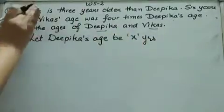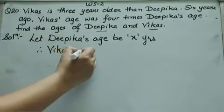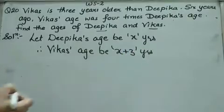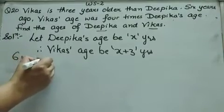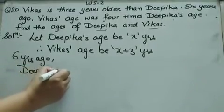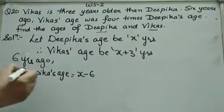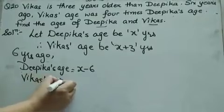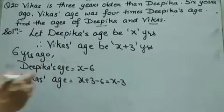If Deepika is X years old and Vikaas is 3 years older, then Vikaas's age is X plus 3. Going back 6 years ago: Deepika's age was X minus 6, and Vikaas's age was X plus 3 minus 6, that is X minus 3.